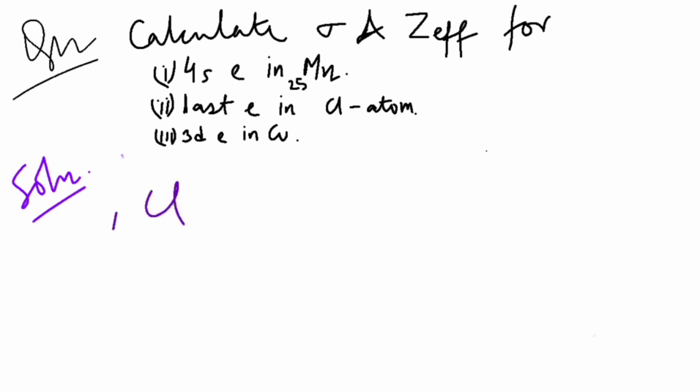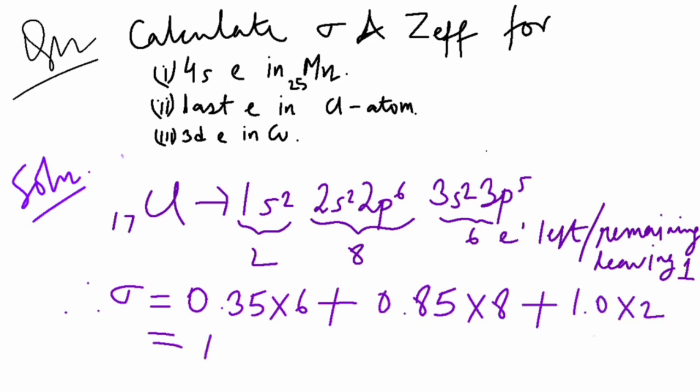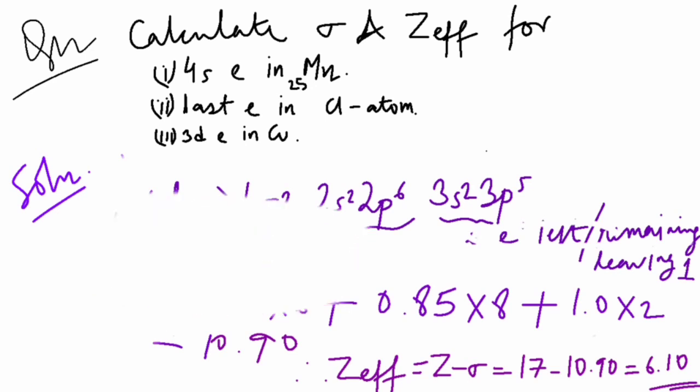Next I solve question number 2. The electronic configuration of chlorine is 1s², 2s², 2p⁶, 3s², 3p⁵. The number of electrons is 6 except 1. The number of electrons in n minus 1 is 8 and rest 2. So the value of sigma is 6 × 0.35, 8 × 0.85 and 1 × 2. After solving this we get a value of 10.90 so Z_effective is 17 minus 10.90 which is 6.10.